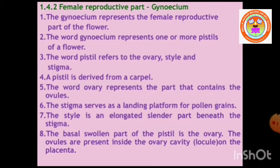Gynoecium represents the female reproductive part of the flower. The word Gynoecium represents one or more pistils of a flower. The word pistil refers to the ovary, style, and stigma. A pistil is derived from a carpel. The ovary represents the part which contains the ovules.